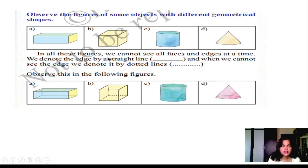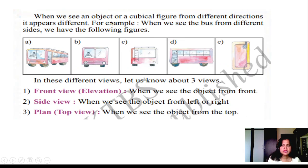Observe the following figures. This figure and this figure you observe, dotted lines are here, in this, in this, which are invisible. That is shown with the dotted lines in mathematics. Observe the two figures. When we see an object or cubical figure from different directions, it has a difference. For example, we see the bus from different sides.